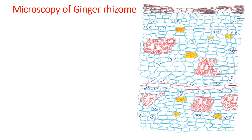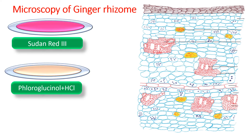Regarding staining: Sudan red imparts a reddish or pinkish tint to the peripheral cork region. To stain xylem or lignified tissue, phloroglucinol HCl can be used, which stains the lignified area pink. The xylem present in the cortex as well as in the pith region is stained pink, and the single endodermal cell layer, which is also lignified, also gets a pink stain.